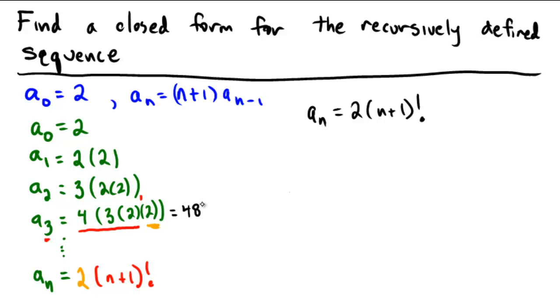And if I were to replace n with 3, what would I get in this particular formula? I get a sub 3 would be equal to 2 times 3 plus 1 factorial, which is 2 times 4 factorial. 4 factorial is 4 times 3 times 2 times 1, so that would be 24. And sure enough, 2 times 24 is 48. So it looks like our formula is working.